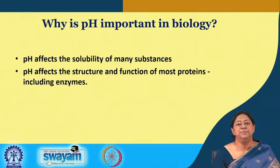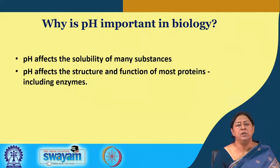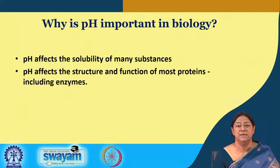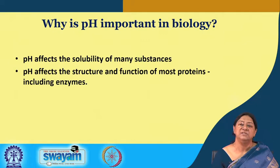Why is pH important to biology? Biological macromolecules such as proteins, DNA, and nucleic acids are very sensitive to pH because they contain amino acids, nitrogenous bases, hydrogen bonds, and sugar-phosphate backbones — each sensitive to changes in acidity and basicity. The pH affects the solubility of many biological substances and also affects the structure and function of most proteins, including enzymes, which we will look at later in the course.